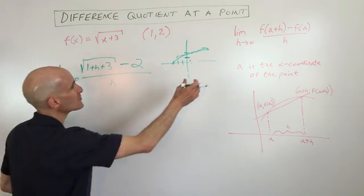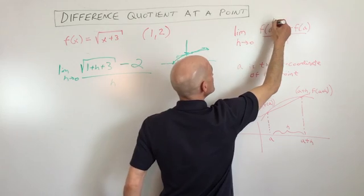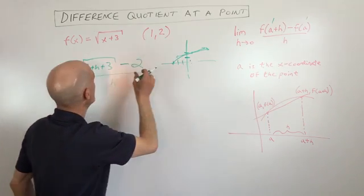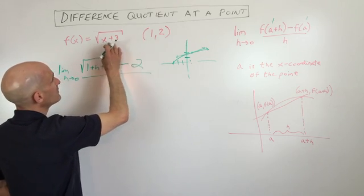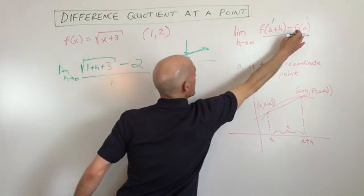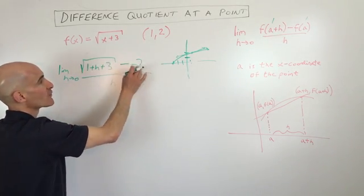So you're with me so far. So all I did was I put a plus h, in this case a is one. So I put one plus h in place of x, and I put one in place of x here. That's f of one, and that gives you the square root of four, which is two.